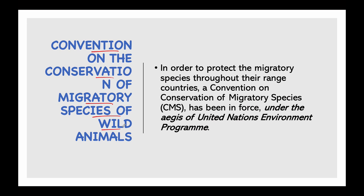To protect migratory species throughout their range, the Convention on the Conservation of Migratory Species (CMS), also referred to as the Bonn Convention, operates under the aegis of the United Nations Environment Programme. It provides a global platform for conservation and sustainable use of migratory animals and their habitats. Migratory species are animals that move from one habitat to another during different times of the year due to factors like food, sunlight, temperature, and climate — sometimes traveling thousands of kilometers — requiring habitats at each stage of migration, which is why international cooperation through such conventions is essential.